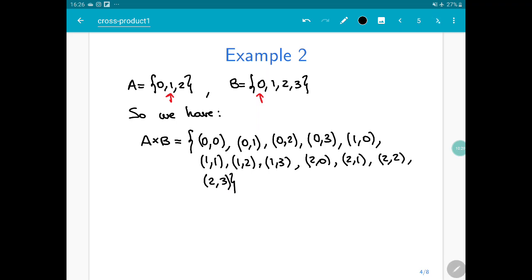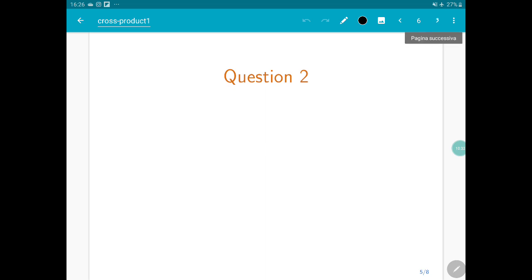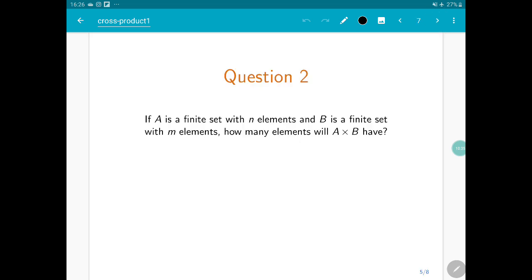Keep in mind the example that we just saw. So imagine that A is a finite set with n elements, and B is a finite set with m elements. How many elements will A cross B have? So these are the options: n plus m, n times m, or it is independent on the number of elements of A and B.